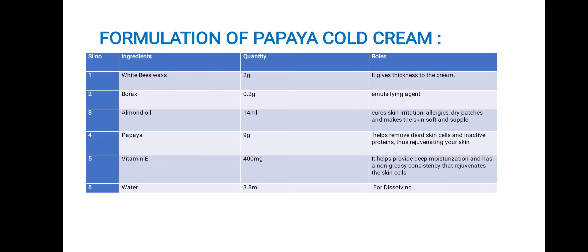Formulation of papaya cold cream. Ingredients used: white beeswax — 2g, gives thickness to the cream. Borax — 0.2g, acts as emulsifying agent. Almond oil — 40ml, reduces skin irritation, allergies and dry patches, and makes the skin soft and supple. Papaya — 9g, helps to remove dead skin cells. Vitamin E — 400mg, helps to provide deep moisturization and non-greasy consistency. Water — 3.8ml, for dissolving.